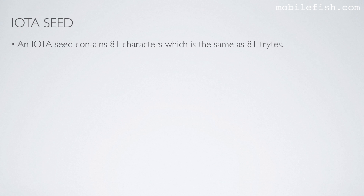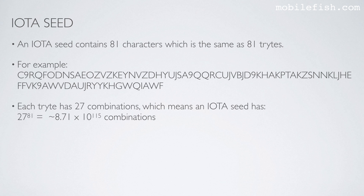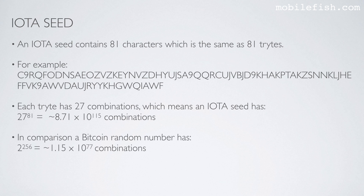An IOTA seed contains 81 characters, which is the same as 81 trytes. Each tryte has 27 combinations, which means an IOTA seed has 27 to the power of 81, approximately 8.71 times 10 to the power of 115 combinations. In comparison, a Bitcoin random number has 2 to the power of 256, approximately 1.15 times 10 to the power of 77 combinations. You can clearly see an IOTA seed has a much larger number of combinations compared to a Bitcoin random number.